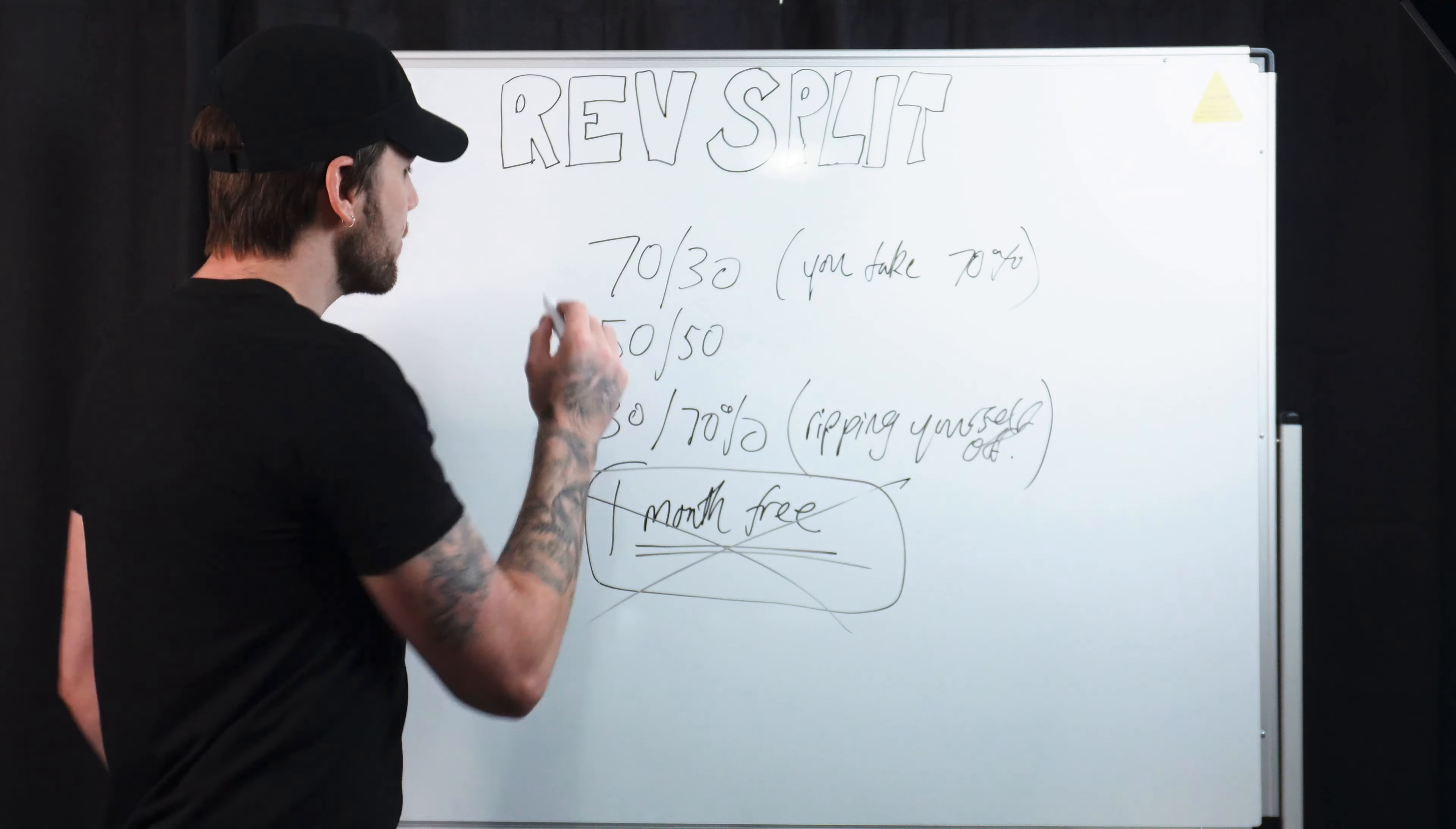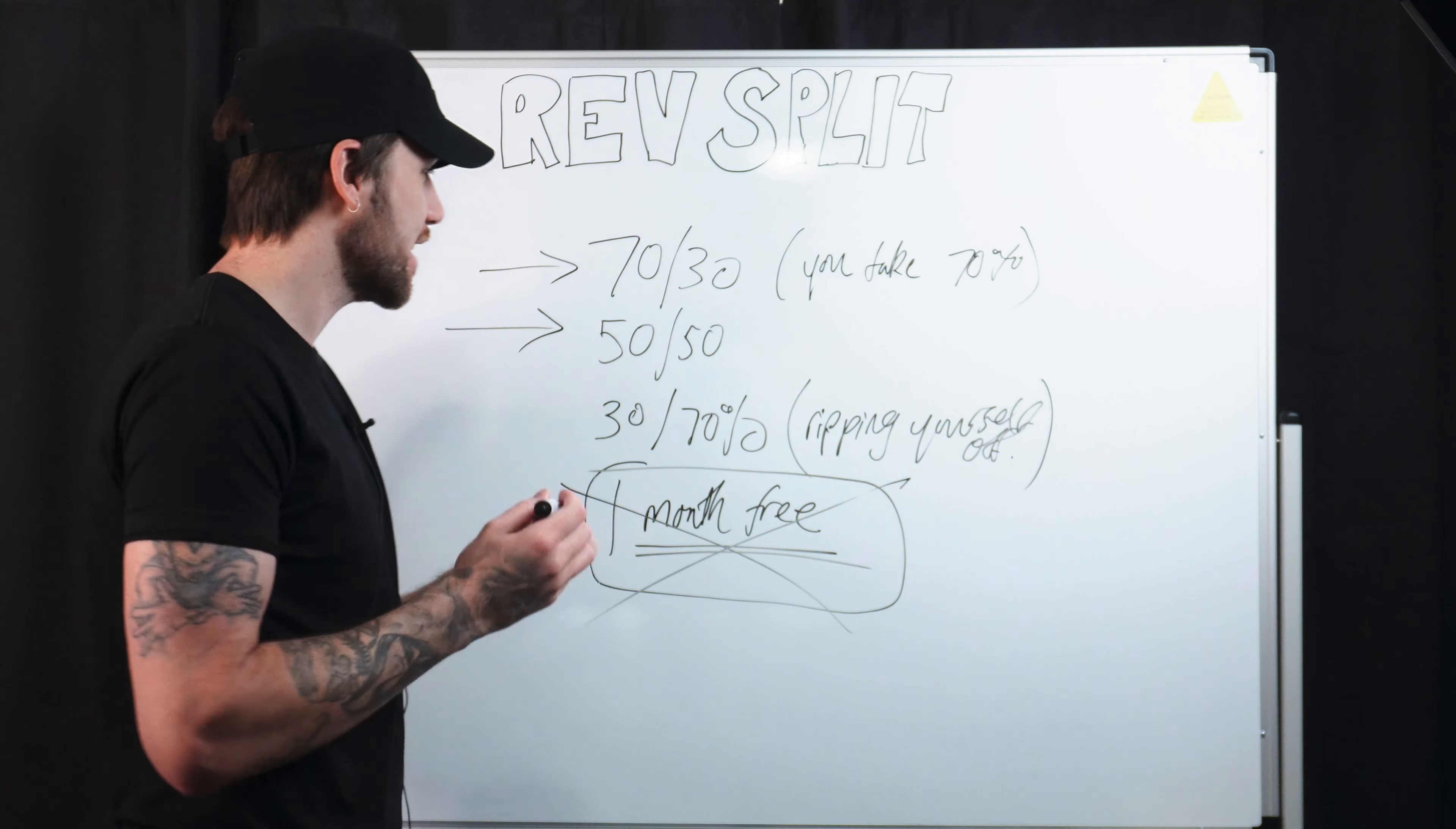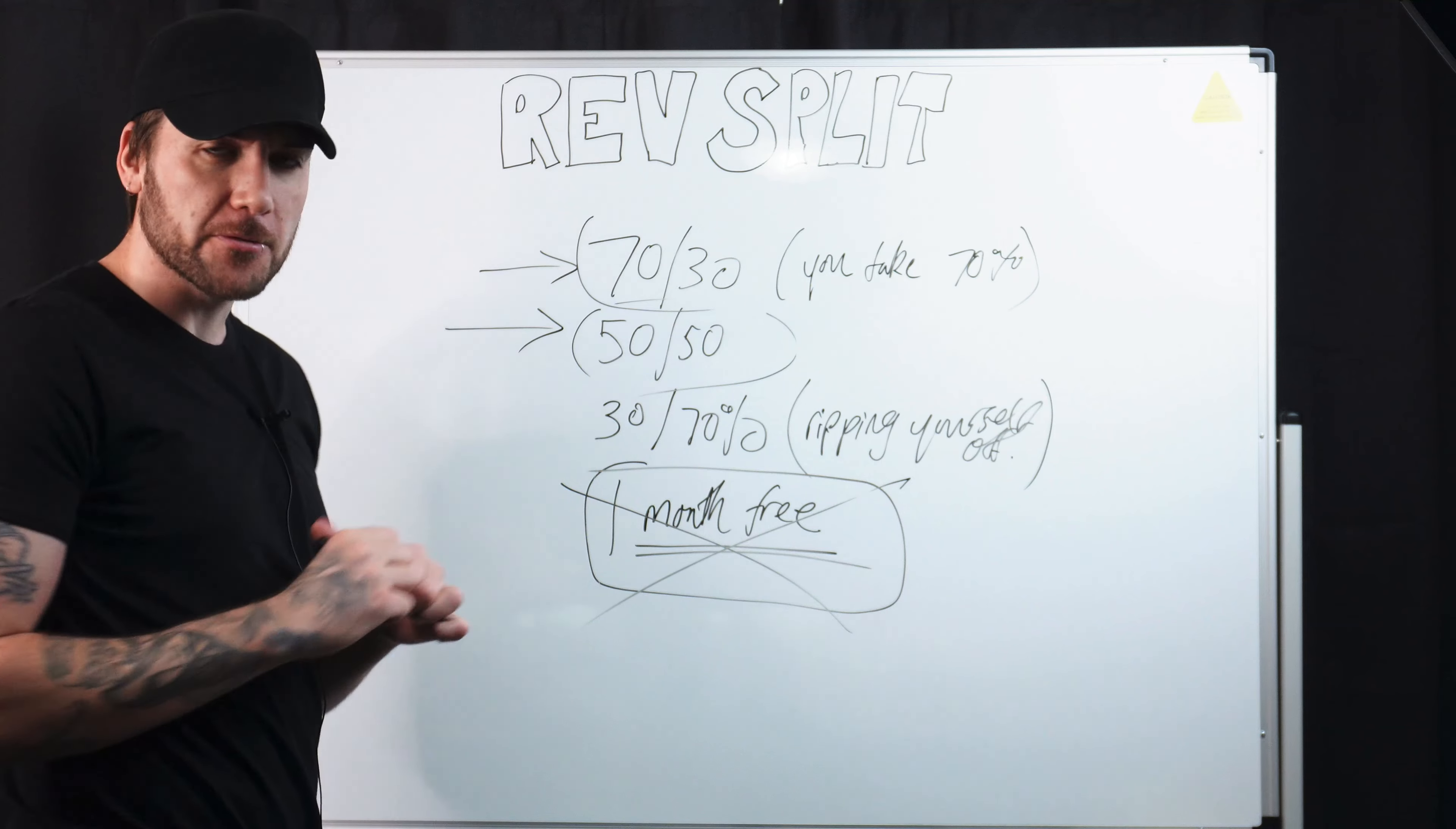So that leaves us with these two here. I've seen slight deviations. I've seen like 60, 40, 65, 35, had to work that out for a sec. Same thing. Alright. That'll all come into 70, 30. And then there's the 50, 50. So the 70, 30, here's your problem with that.